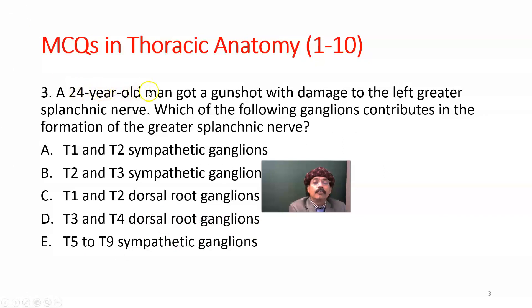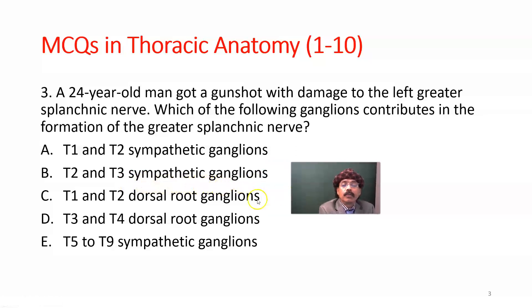Question number 3. A 24-year-old man got a gunshot with damage to the left greater splanchnic nerve. Which of the following ganglia contribute to the formation of the greater splanchnic nerve? Options: T1-T2 sympathetic ganglia, T2-T3, T1-T2 dorsal root ganglia, T3-T4 dorsal root ganglia, or T5-T9 sympathetic ganglia. The greater splanchnic nerve is formed by T5 to T9 sympathetic ganglia. Answer is E.